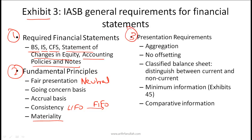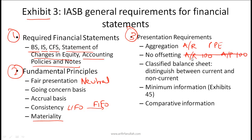Finally, presentation requirements: aggregation means each material class of similar items must be presented separately — dissimilar items are presented separately unless they are immaterial. So all accounts receivable is presented together, property, plant and equipment would be presented together, and so on. No offsetting means you can't offset assets and liabilities unless it is explicitly allowed — for example, you can't offset accounts receivable of 100 against accounts payable of 100. Classified balance sheet means we distinguish between current and non-current assets.